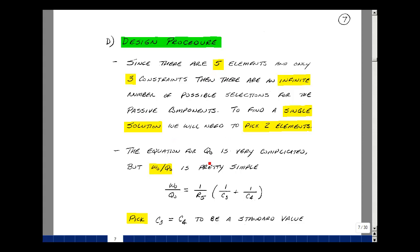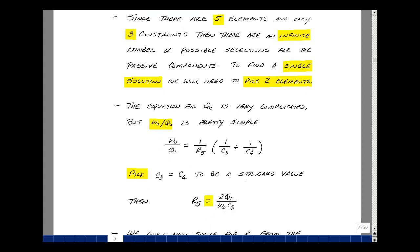Now the equation for Q-naught was pretty complicated. In fact, all the equations are pretty complicated, but the ratio of omega-naught to Q-naught was just equal to this expression, which is a lot simpler. And so maybe this is a good place to start.